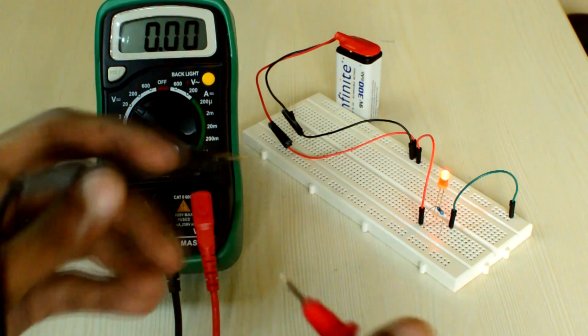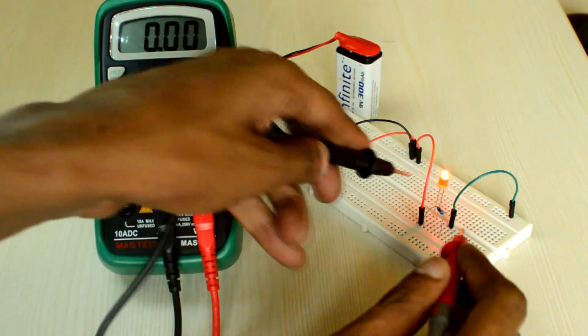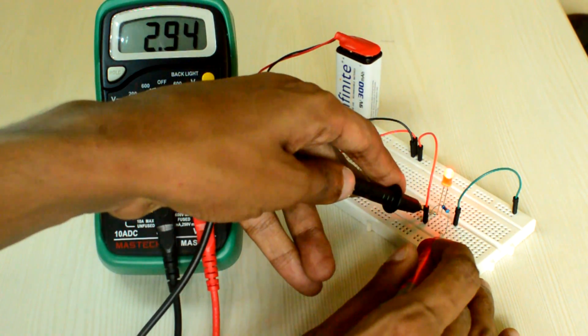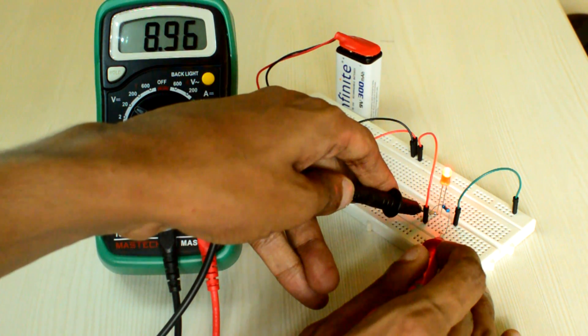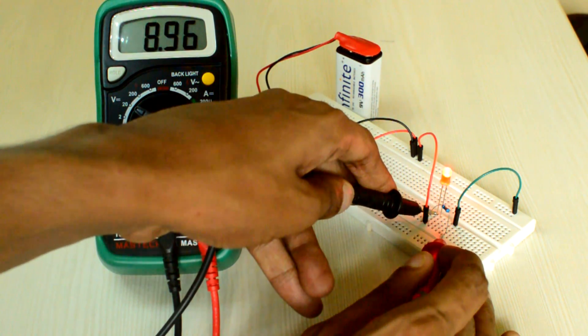First, let us see how much voltage the battery is providing. Place the pins through the resistor's positive and the LED's negative. You can see that the voltage is approximately 8.96V which is pretty close to 9V.